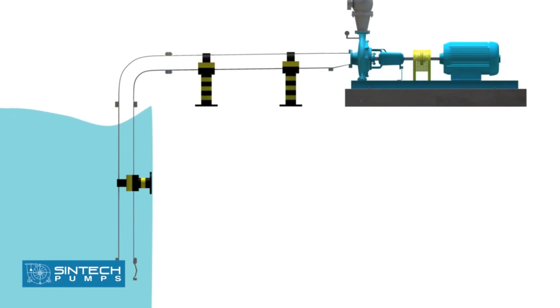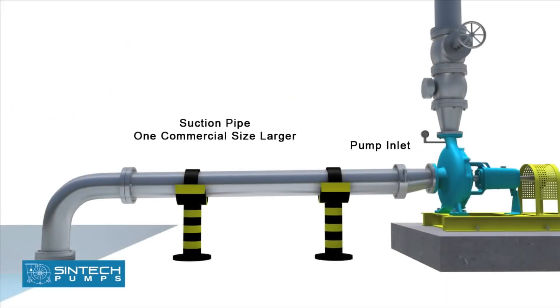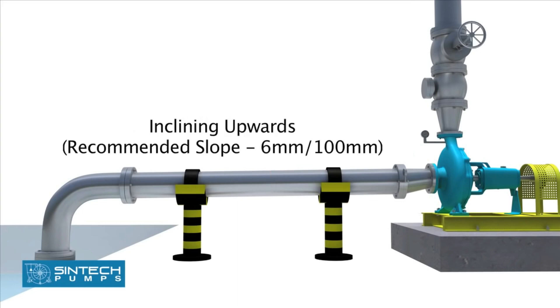The suction pipe should be sized to ensure the liquid velocity of not more than two meters per second. The suction pipe size should be at least one commercial size larger than the opening of the pump inlet. All suction pipes should have a continuous rise to the pump suction inlet. 6mm per 100mm slope is recommended.